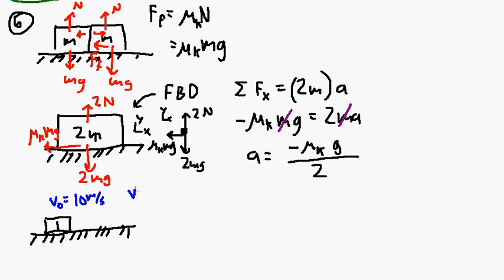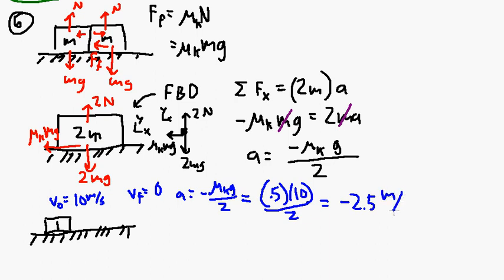And then of course the final velocity is 0, and acceleration is negative mu kg over 2. So I'm just going to go ahead and put the numbers in. So this is going to equal 0.5 times 10 over 2, which is going to equal negative 2.5 meters per second squared.